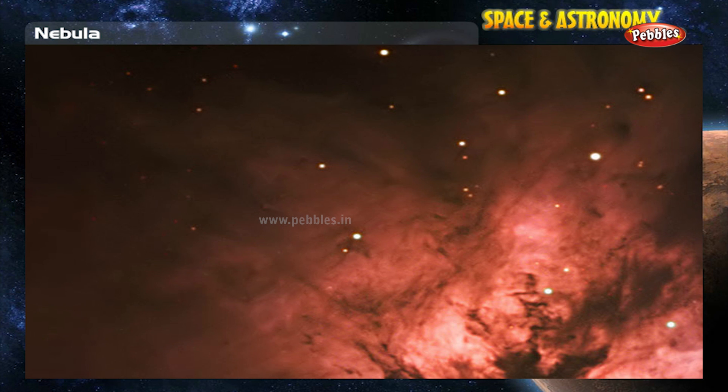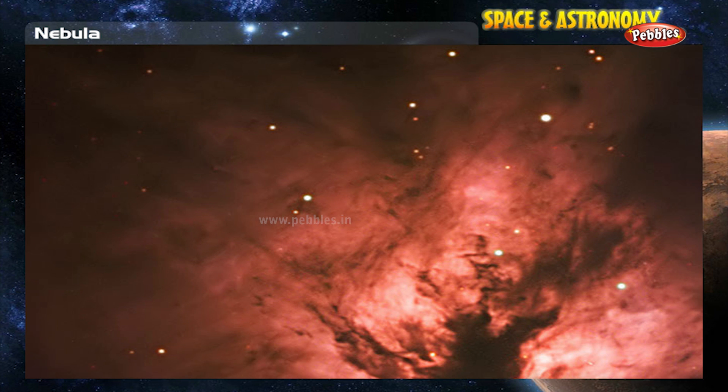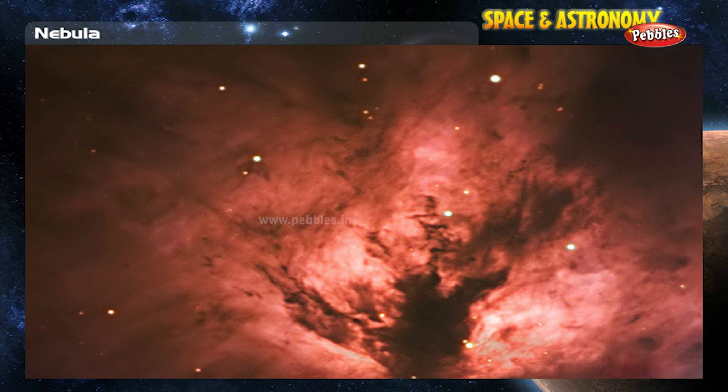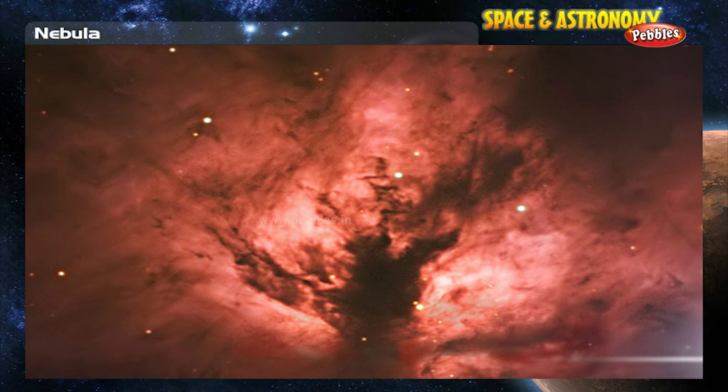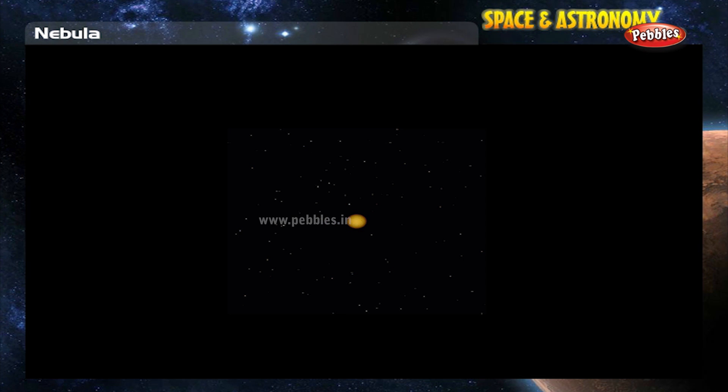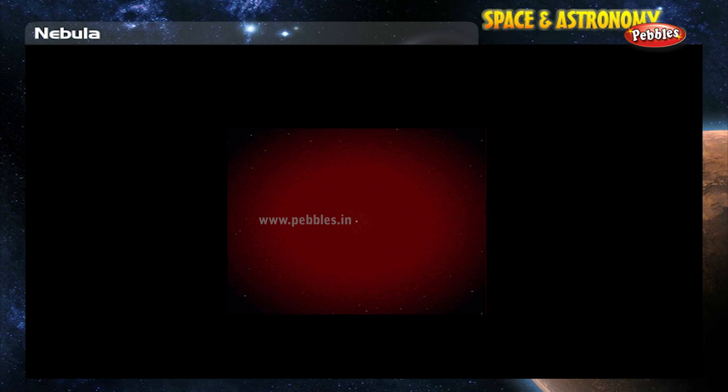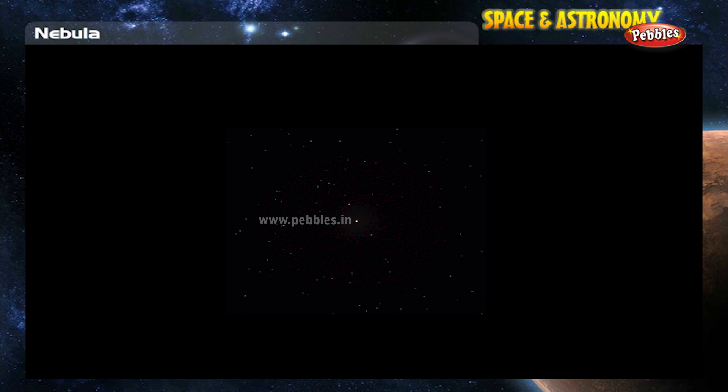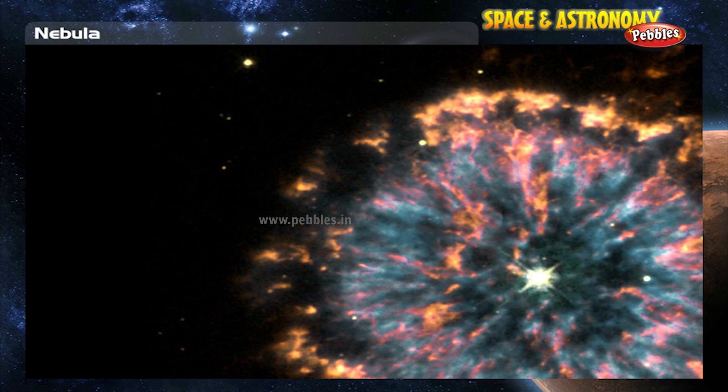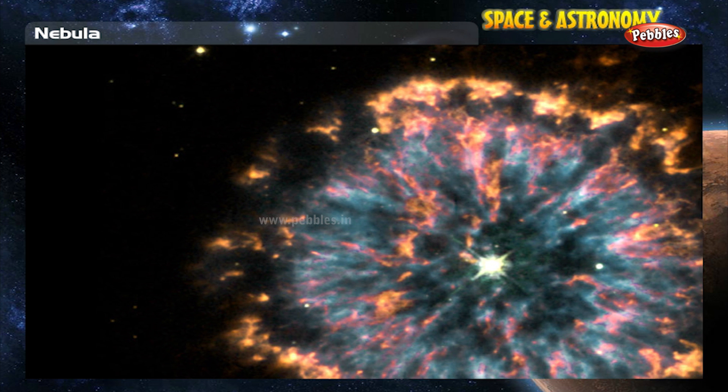Other nebulae may form as planetary nebulae. This is the final stage of a low-mass star's life, like Earth's Sun. Stars with a mass up to 8 to 10 solar masses evolve into red giants and slowly lose their outer layers during pulsations in their atmospheres.